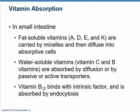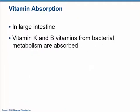The water-soluble vitamins are absorbed by diffusion. B12 needs the intrinsic factor and is then absorbed by endocytosis — really a kind of pinocytosis or phagocytosis. Vitamin K and B vitamins are synthesized by the bacterial flora of the large intestine, so that's where they're absorbed.